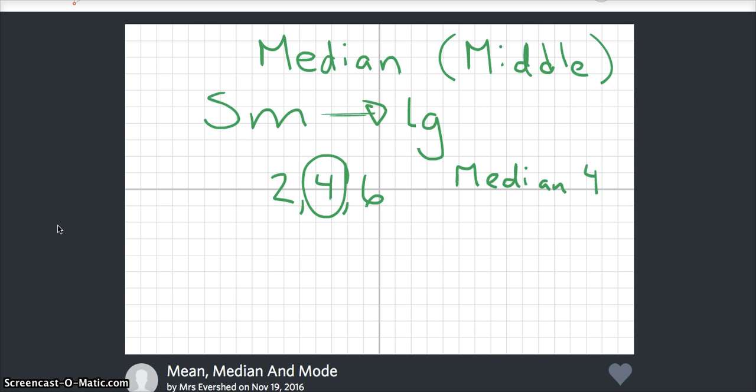Now, some of you were already asking, what if we have an even amount of data? So if we had 2, 4, let's say 7, and 12. Right now, there's two pieces in the middle, but we still need to find what's the middle of those two numbers.